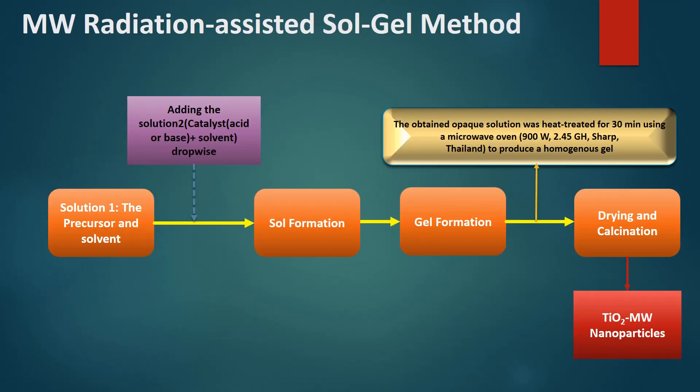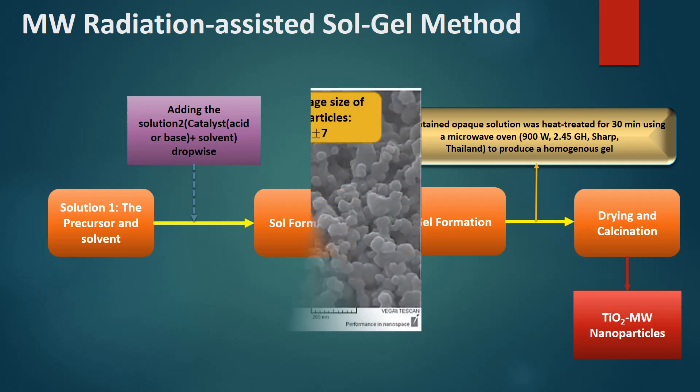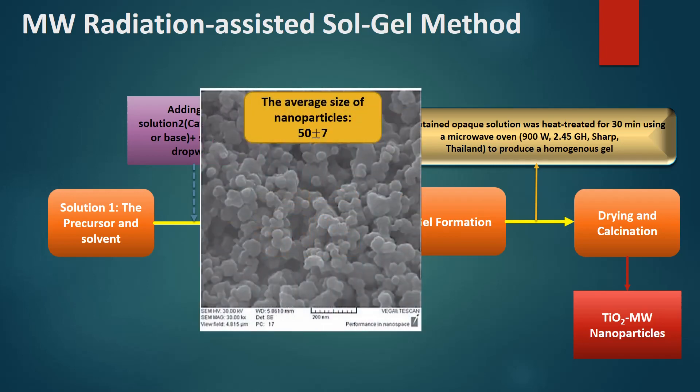What is microwave radiation assisted sol-gel method? After gel formation, the obtained opaque solution was heat treated for 30 minutes using a microwave oven to produce a homogenous gel. After drying and calcination we have TiO2 microwave nanoparticles. The average size of nanoparticles was 50 plus or minus 7, and this picture shows SEM analysis of TiO2 microwave nanoparticles.